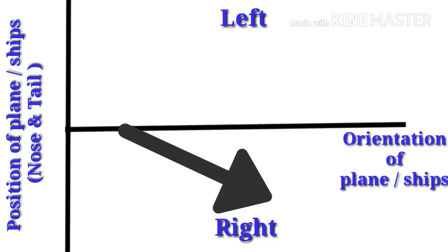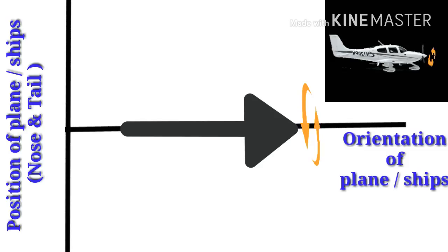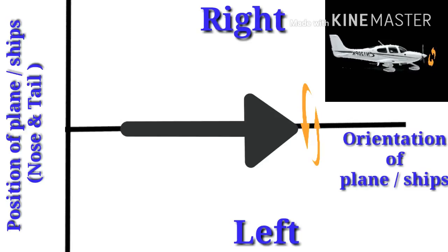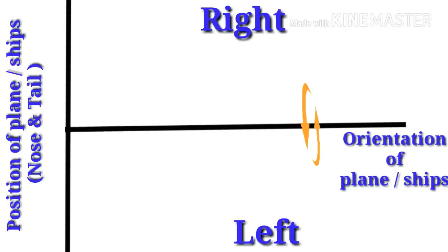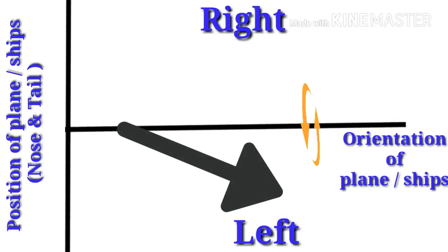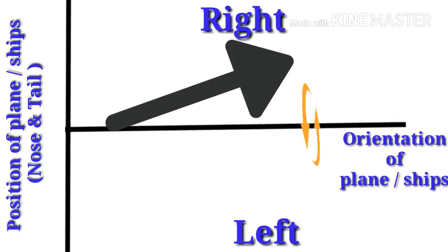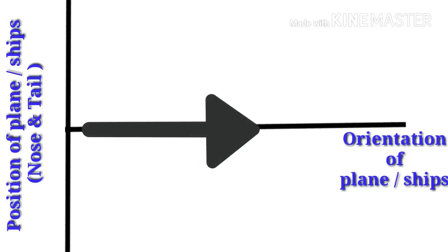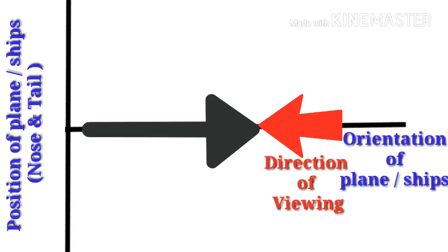When the rotor moves in the anticlockwise direction, simply swap left and right sides. The same conditions apply but reversed: when the plane takes a left turn the nose dips and the stern rises; when it takes a right turn the nose rises and the stern dips — exactly opposite to the clockwise direction case.